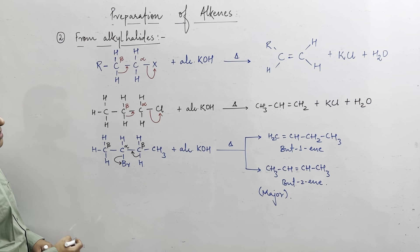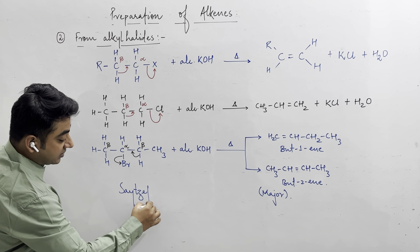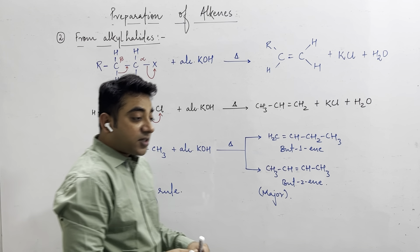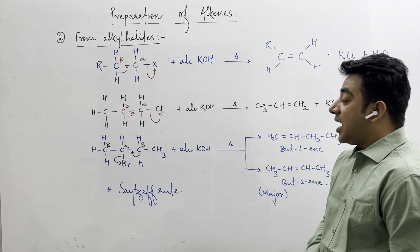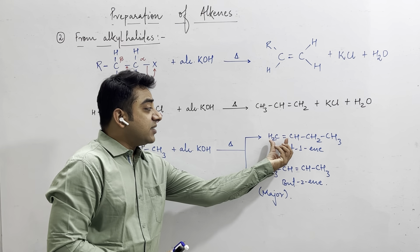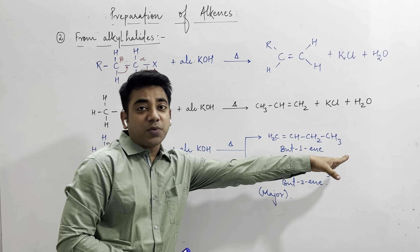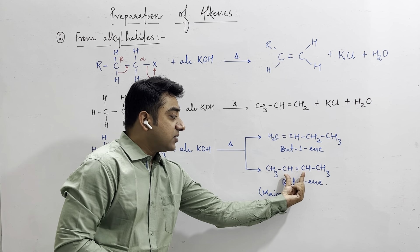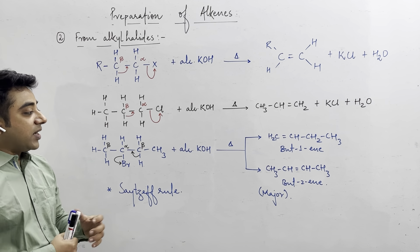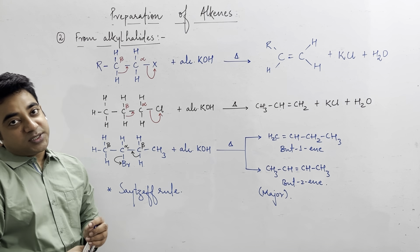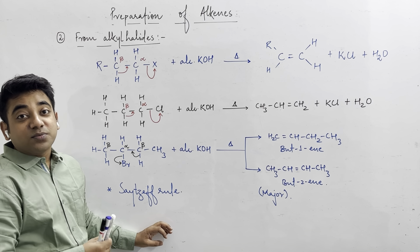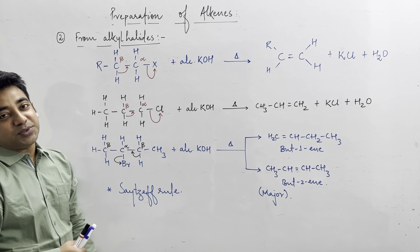But-2-ene is the major product according to Zaitsev's rule. This rule states that in a dehydrohalogenation reaction, the preferred major product is the alkene which has more alkyl groups across the doubly bonded carbon atoms. In but-1-ene there is only one alkyl group across the double bond, whereas in but-2-ene there are two alkyl groups on either side. Therefore but-2-ene is the major product.